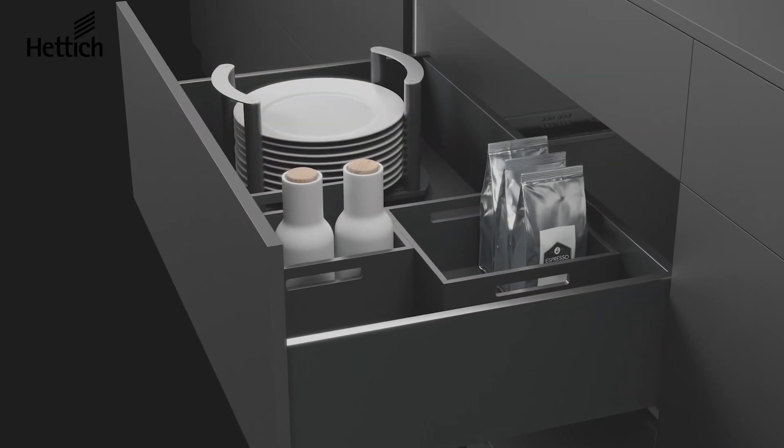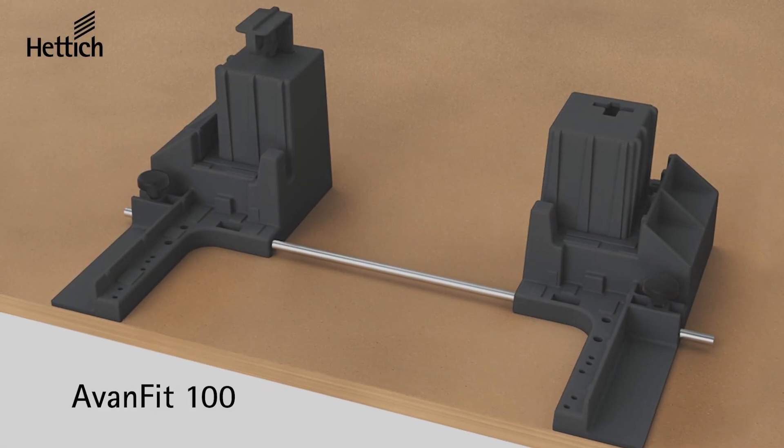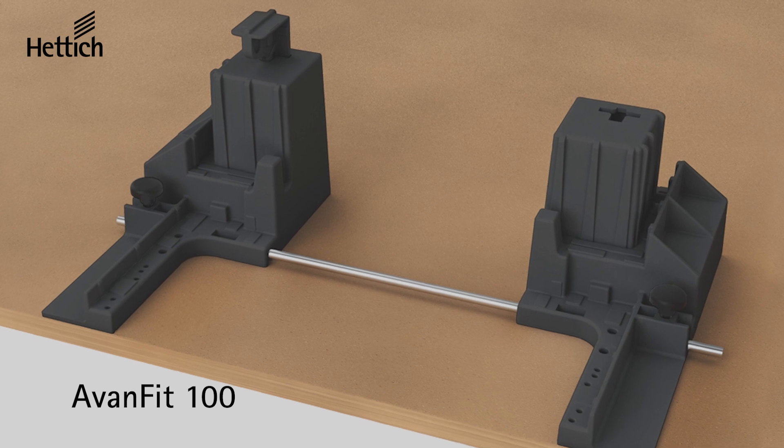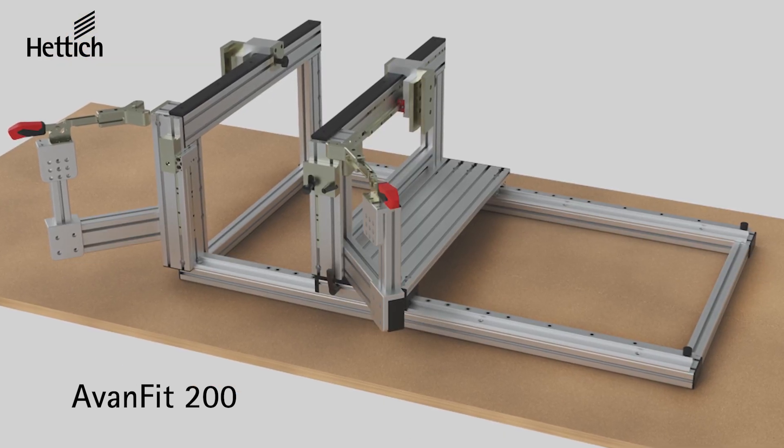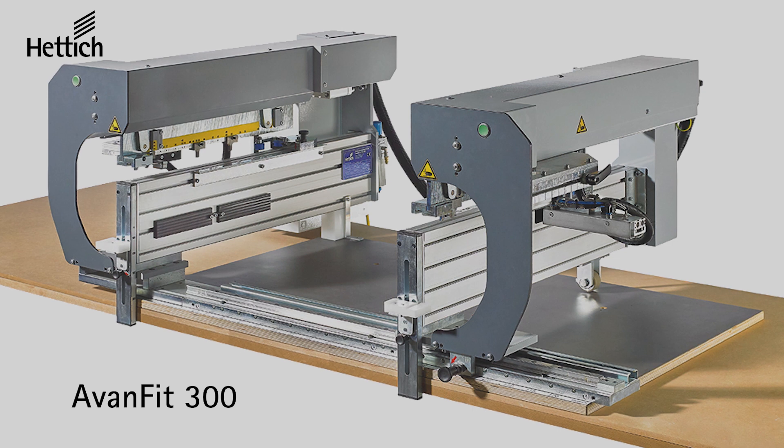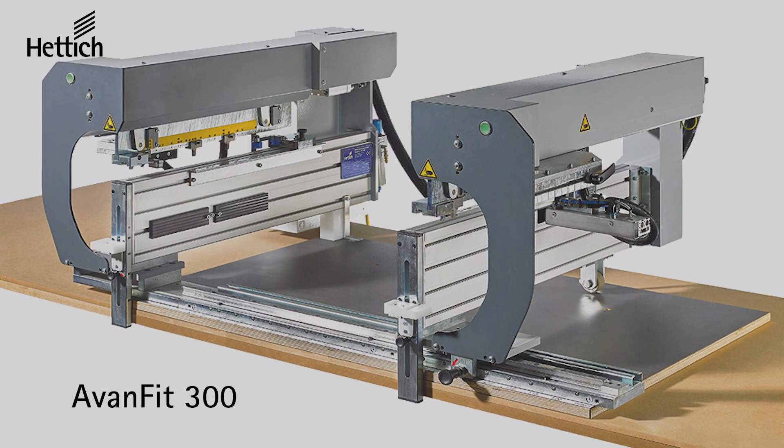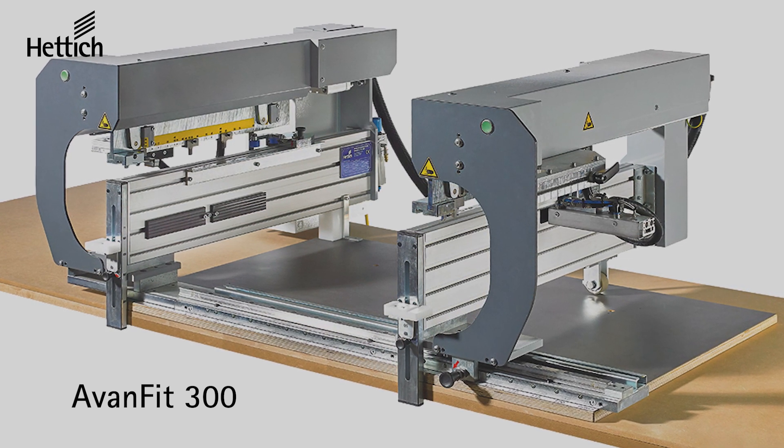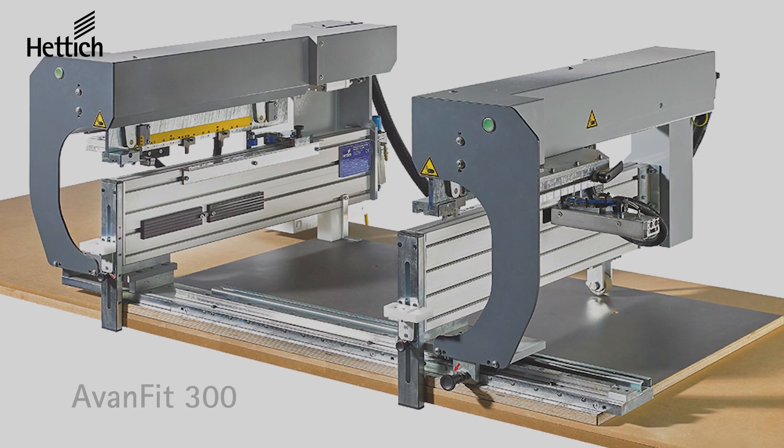The AVENFIT 100 which can assemble 15 drawers per hour, the AVENFIT 200 40 drawers per hour, and the AVENFIT 300 65 drawers per hour. Today I will be reviewing this assembly aid.